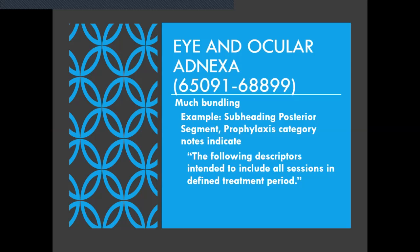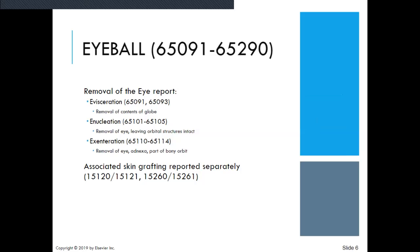Our next slide on eye and ocular adnexa: there's a lot of bundling in these codes. For example, subheading posterior segment, prophylaxis category — notes indicate the following descriptors are intended to include all sessions and define treatment period. So you're going to have some globals in there, which would be bundling. Now we're going to talk about the eyeball, and you're going to find that at the bottom of page 574. Codes in this category are divided based on which procedure was performed, whether an implant was inserted, and whether a bony orbit was removed or a muscle flap was performed.